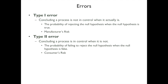There are two types of errors. A Type 1 error is concluding a process is out of control when it actually is in control — in other words, rejecting the null hypothesis when it is true. This is called manufacturer's risk: something is rejected even though it's good. A Type 2 error is concluding a process is in control when it's not — you think the product is good but it's actually bad. This is the customer's risk.